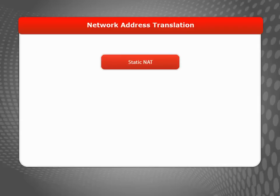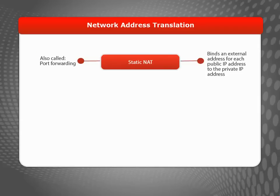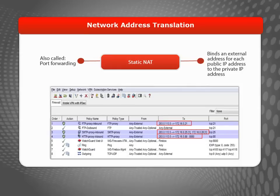With static NAT, which is sometimes called port forwarding, you can bind an external address for each public IP address to the private IP address of the server hosting it, located on your trusted or optional networks. Simply put, static NAT is useful for inbound connections, giving the public access to public servers protected by your firewall.